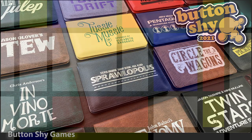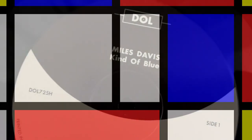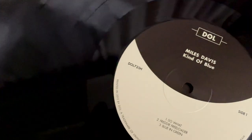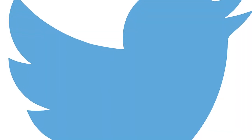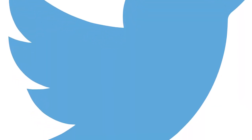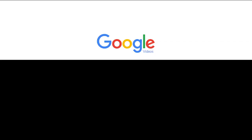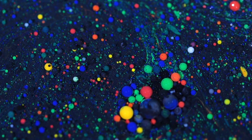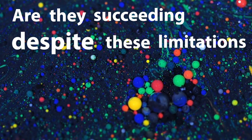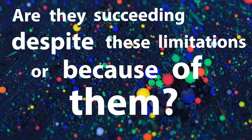Dutch painter Mondrian painted using only primary colours and right angles. Miles Davis wrote the album Kind of Blue using no chords. Even major blue chip corporations seem to give themselves unnecessary limitations — just look at Twitter's character limit or Google's homepage. It leads us to ask: are they succeeding despite these limitations or because of them?